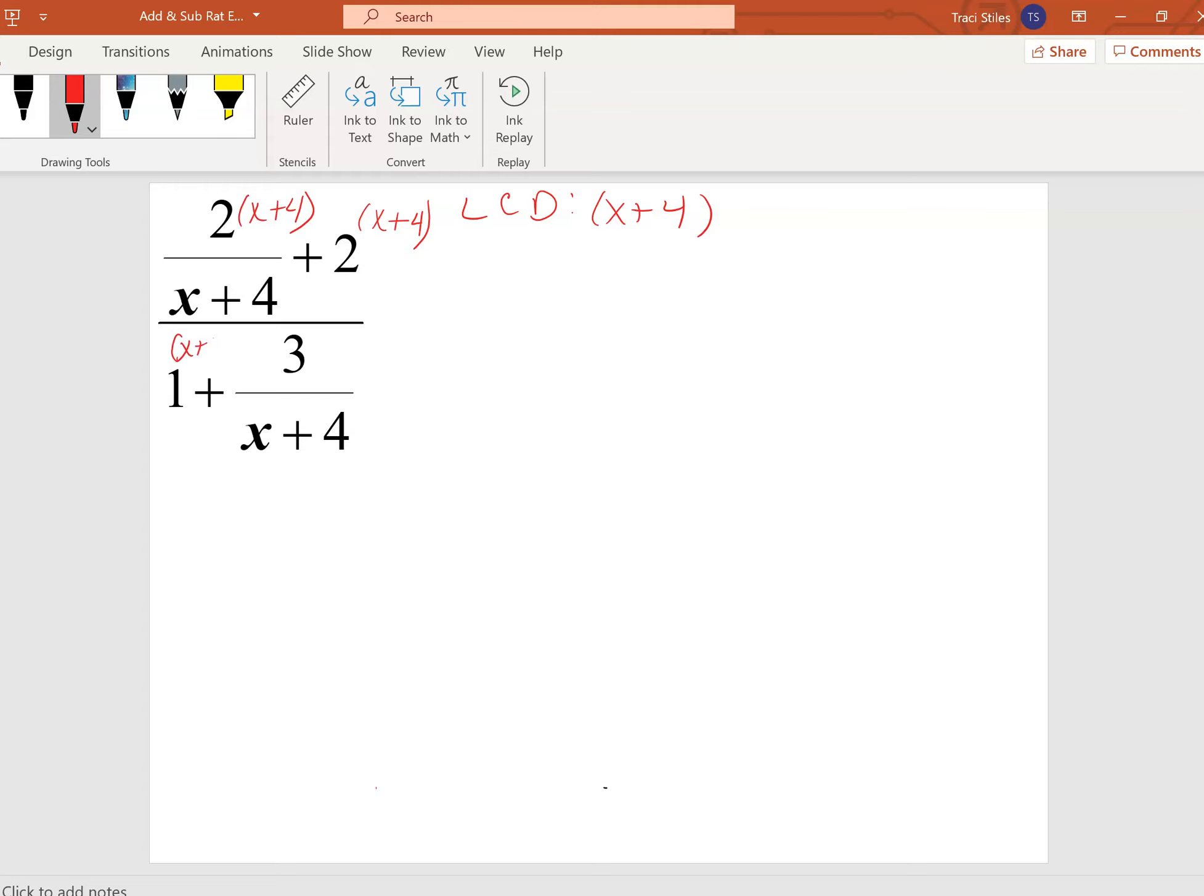Okay, so every term I'm going to multiply by x plus 4. Now, ultimately it would be written like this, x plus 4 over x plus 4, but I like to write it next to each item because then I know I've got to multiply everything by that.